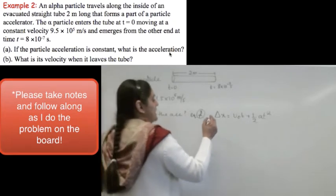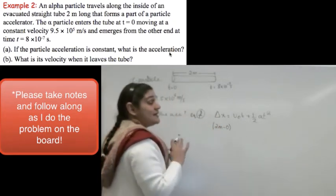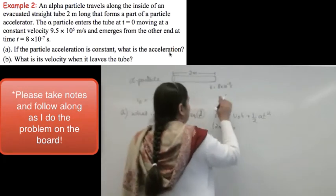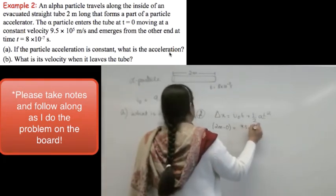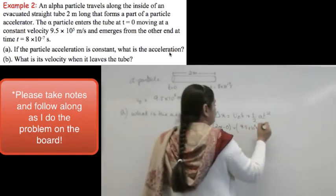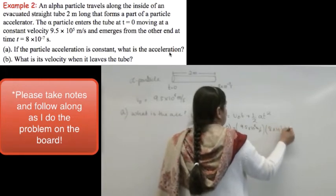I know delta x, which is 2 meters minus 0 meters, the length of the tube, times v naught, which was 9.5 times 10 to the 5 meters per second. t is given as 8 times 10 to the minus 7 seconds...